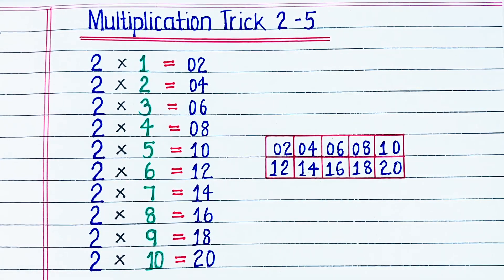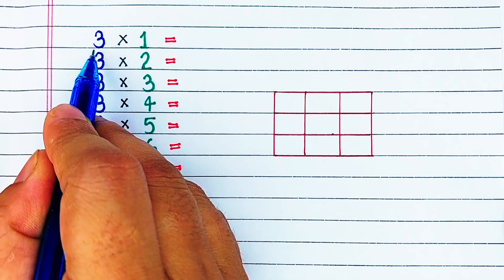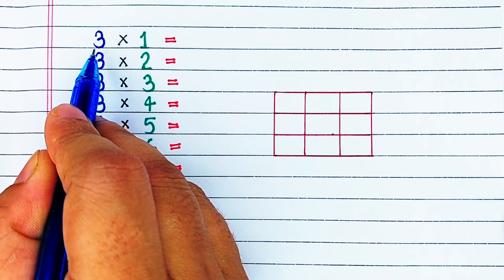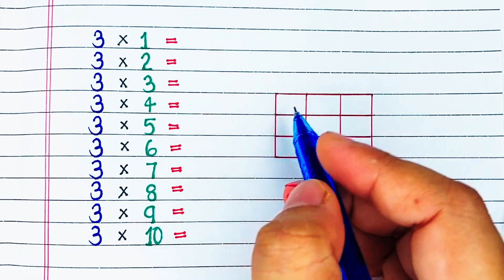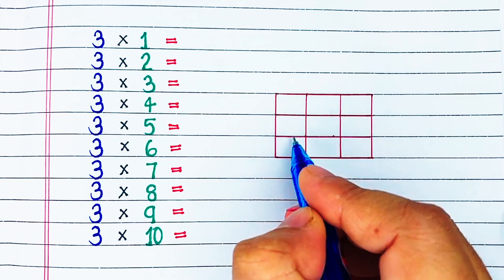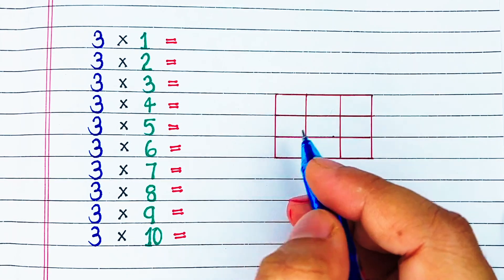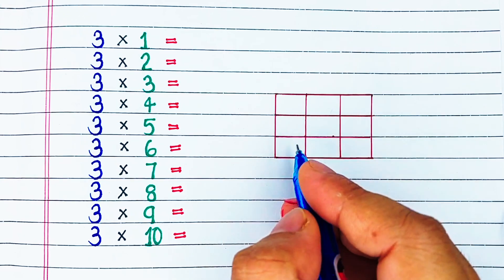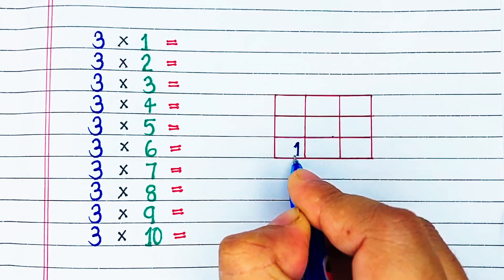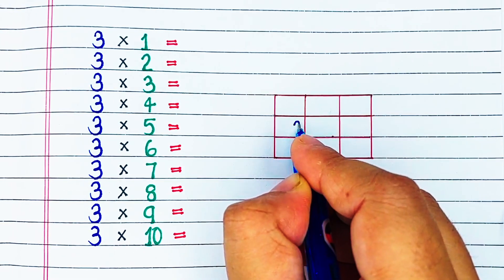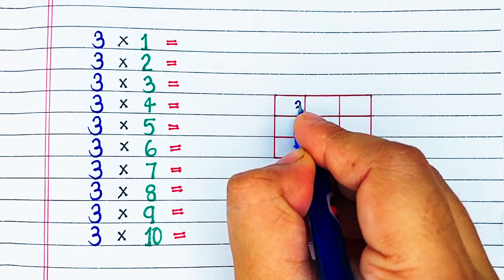Next, the maths trick for 3 times table. We will start by drawing a 3 by 3 grid. Here, we have 3 columns and 3 rows. Now, we will start from the leftmost bottom corner and we will write 1 to 9 in an upward direction, with the lowest number at the bottom.